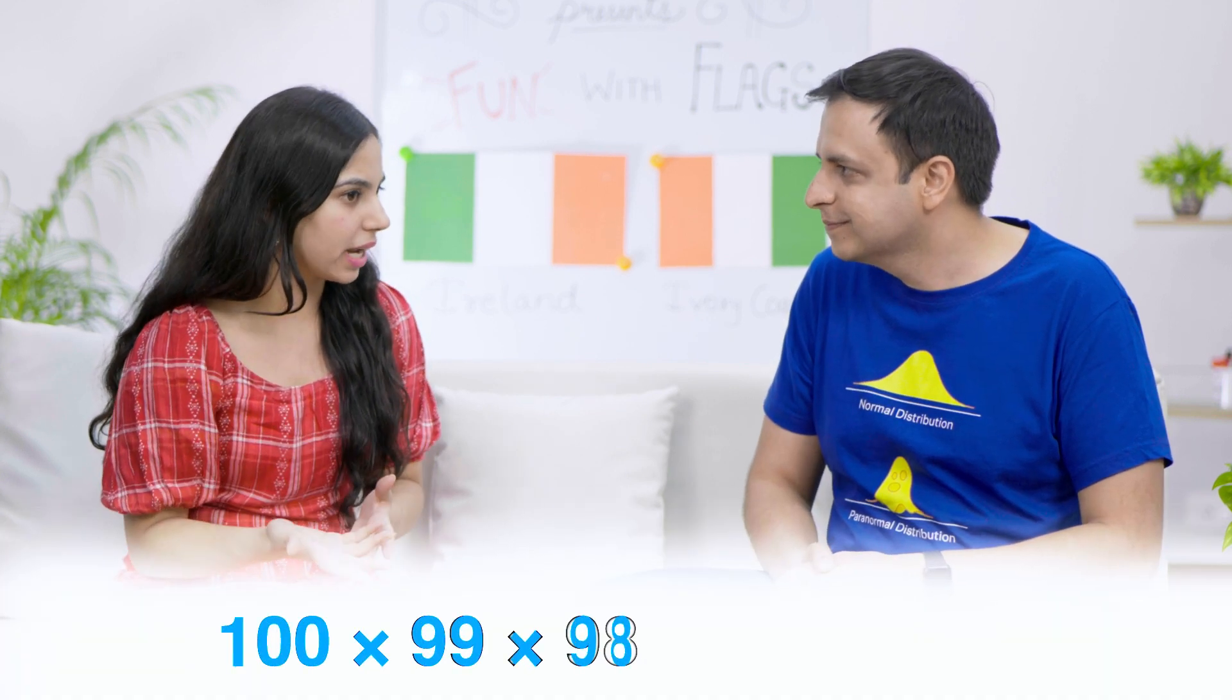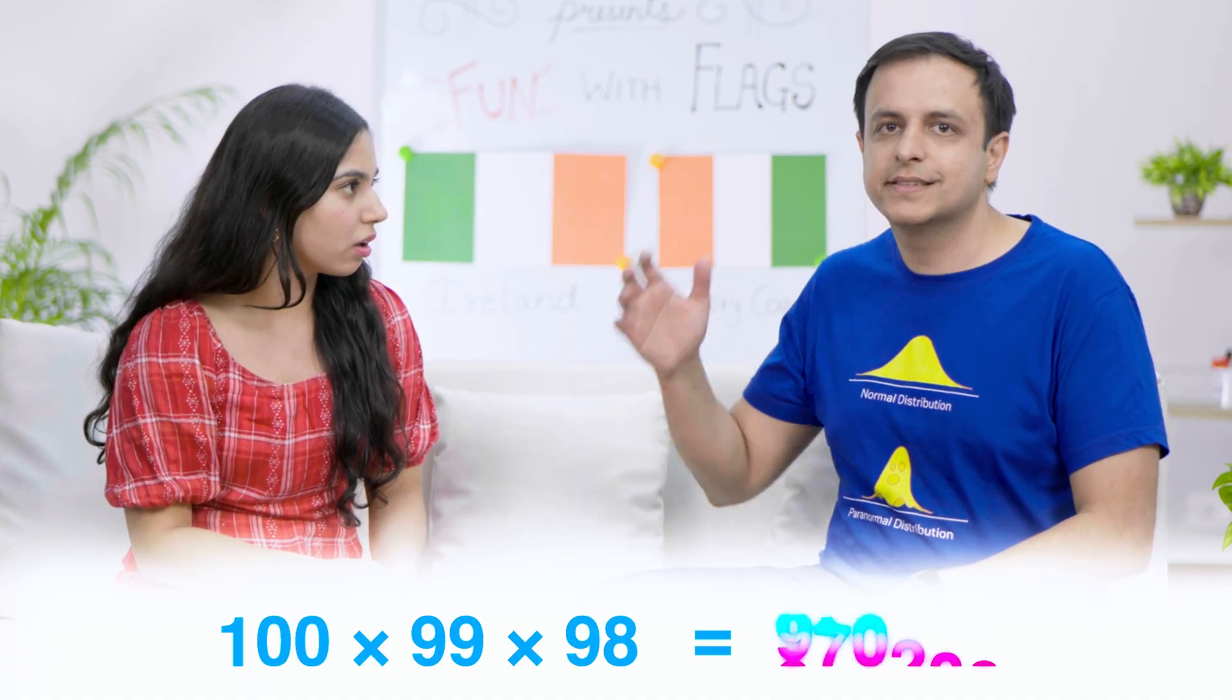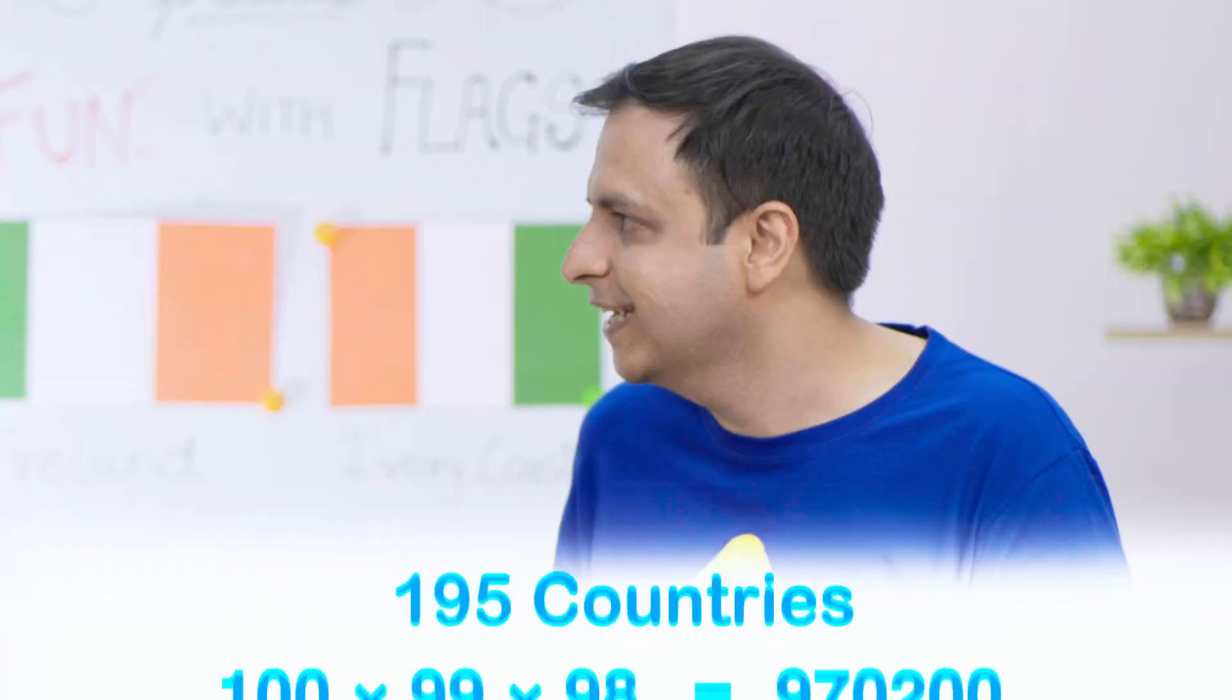Okay. Time for a challenge. Suppose all countries in the world had tricolor flags. How many colors would be just enough so that every country got their own flag? Don't know. At least 100 I guess. Much less than that. Really? Don't think so. So let's start with your guess. How many flags are possible with 100 colors? 100 times 99 times 98. And that's almost a million flags and just 195 countries.